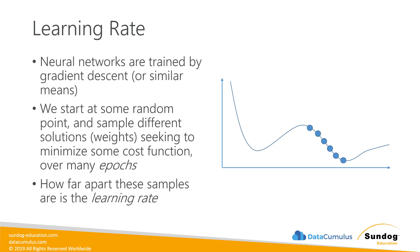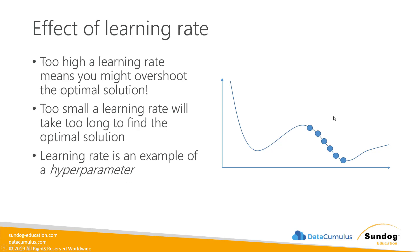The learning rate is about how far apart those samples are. If your learning rate is too high, you might overshoot that solution entirely — jumping past the bottom point. But if your learning rate is too small, you'll sample many points and it will take a lot of epochs to find the optimal solution. So too high a learning rate risks overshooting, while too small a learning rate means training takes longer than necessary.